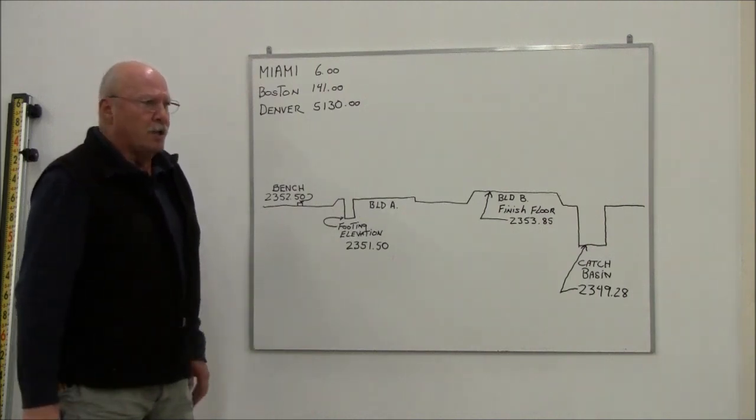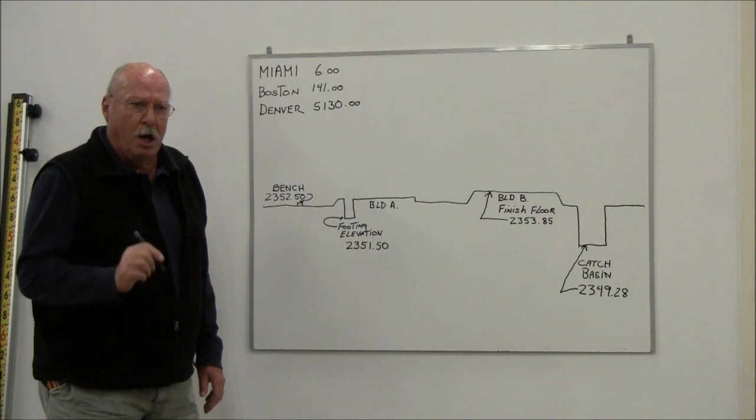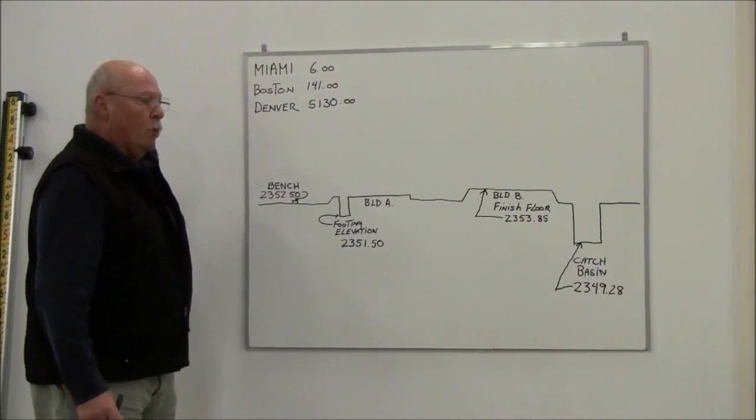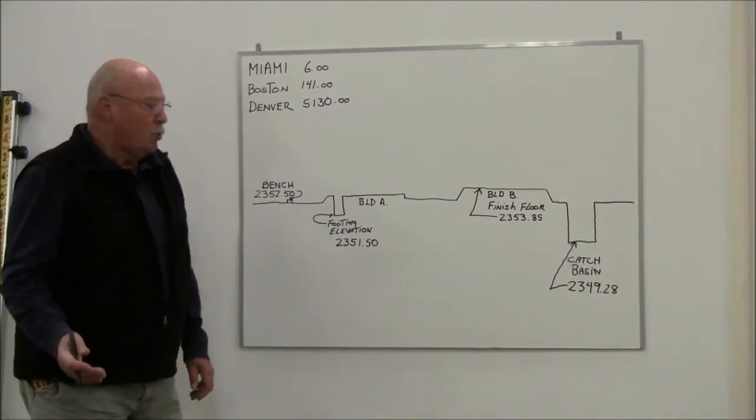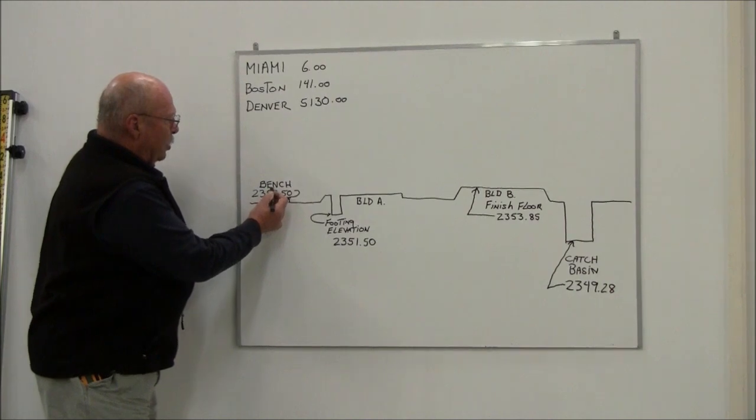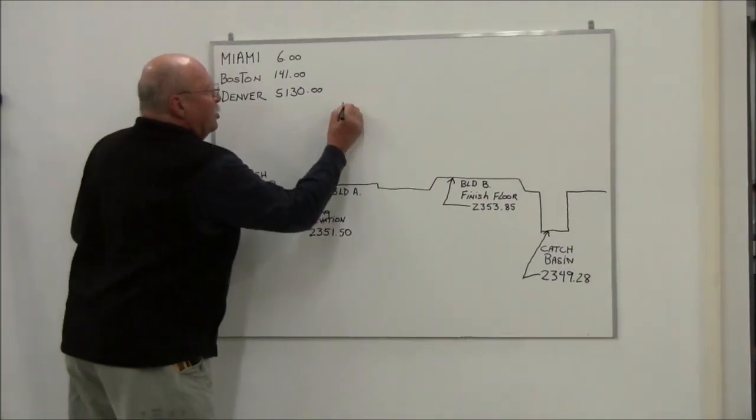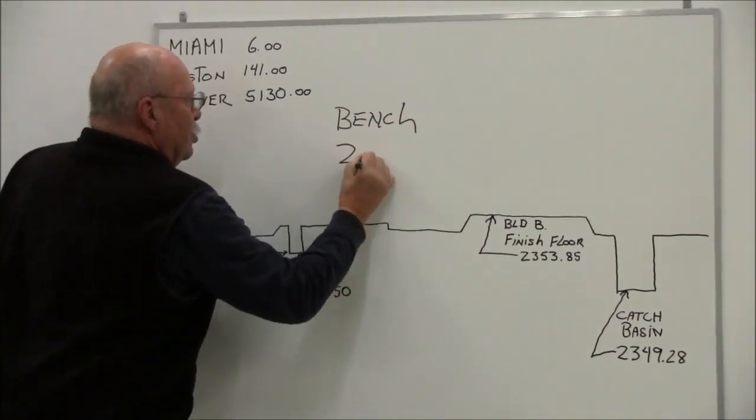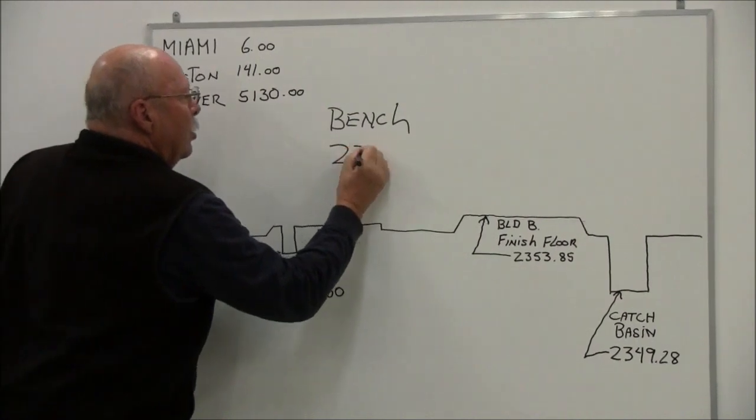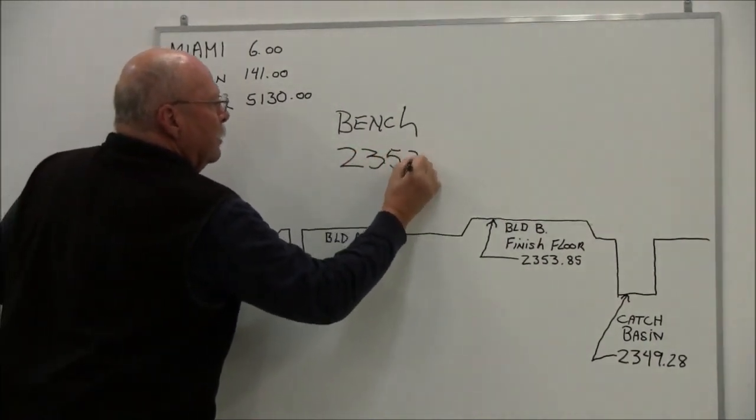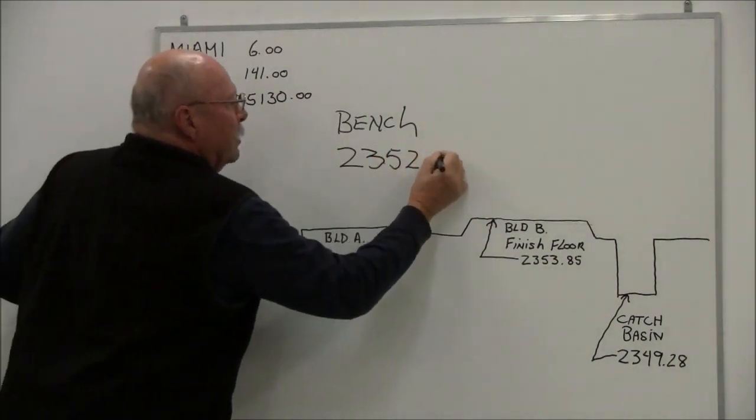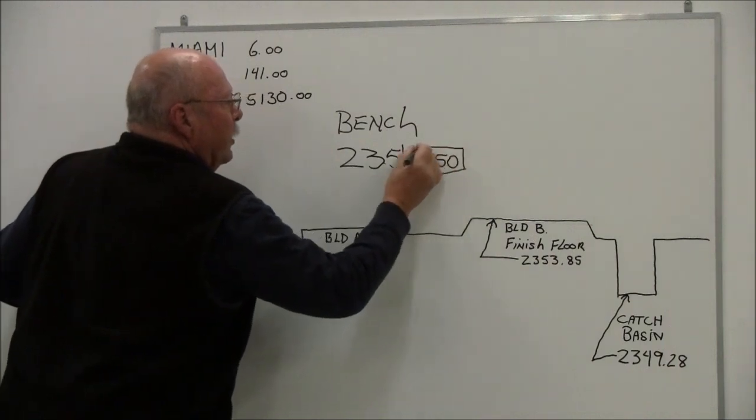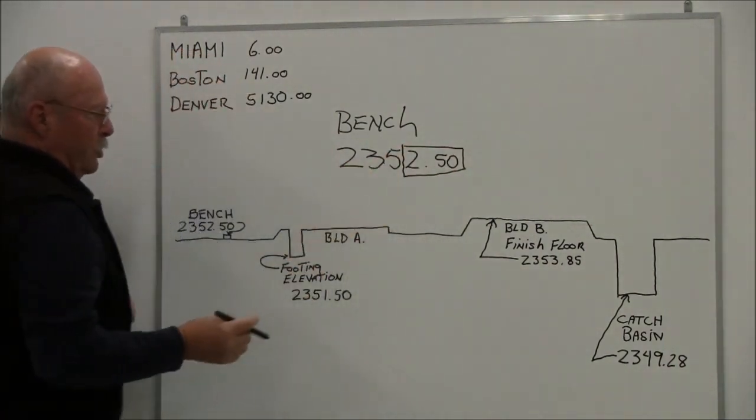So for purposes of conversation today, we're going to say that our benchmark elevation on this job is 2352.50. Well, the grade rod is obviously not 2,000 feet high, so what we're going to use is the whole number and the last two digits. So I've got a bench on this job of 2,352 feet and 50 hundredths.